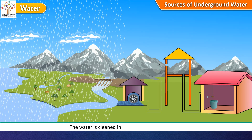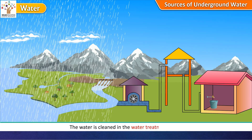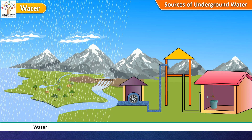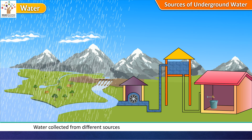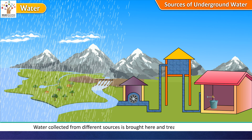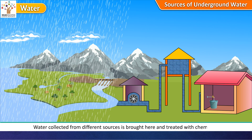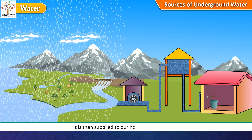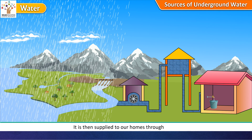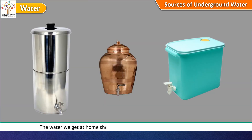The water is cleaned in the water treatment plant. Water collected from different sources is brought here and treated with chemicals. It is then supplied to our homes through pipes. The water we get at home should be stored in a clean and covered container.